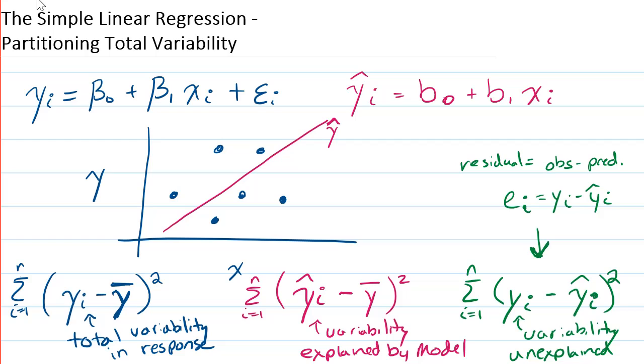And it turns out that the total variability equals the variability explained by the model plus the variability unexplained. And in the next video, I will show this proof. But for right now, it turns out that this equation does make sense.